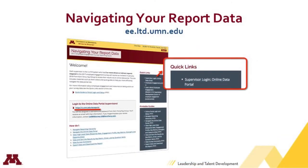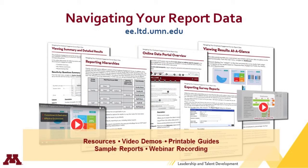Now we want to talk about some employee engagement resources available to you. First, there's the Navigating Your Report Data website at ee.ltd.umn.edu. This site goes over the key points we discussed today. Note that there's a link to the online data portal on the right, so you won't always need to reference the email sent by Korn Ferry the Hay Group. There are various printable guides, quick links, and other resources available on this site, and we'll be adding more information to help with data interpretation. We hope to roll that out before the data is released system-wide in January.